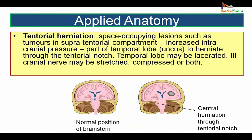Tentorial herniation occurs due to space-occupying lesions such as tumors in the supratentorial compartment, causing increased intracranial pressure. Part of the temporal lobe — mostly the uncus — herniates through the tentorial notch. The temporal lobe may be lacerated, and the oculomotor nerve (CN III) may get stretched, compressed, or both. The picture shows a coronal section demonstrating central herniation of brain tissue through the tentorial notch into the infratentorial compartment.